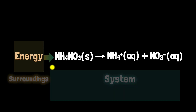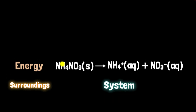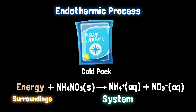But from where? Well, from the surrounding. The surrounding could be anything — for example, your hand. If you're holding this system, then energy will move out from your hand and your hand will feel cold. This is how cold packs work.